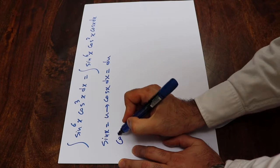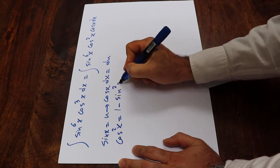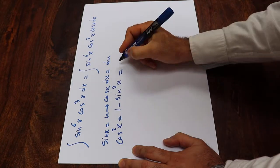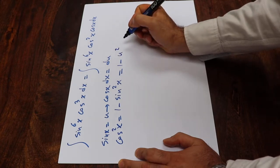From trigonometry we know that the cosine 2x is equal to 1 minus sine squared x. Therefore cosine 2x will be equal to 1 minus, and instead of sine x I write u, that will be u squared.